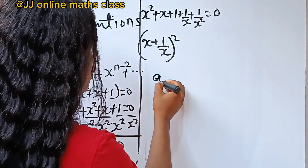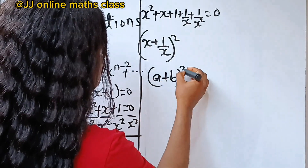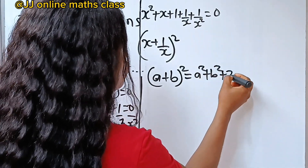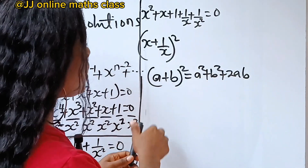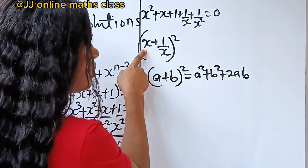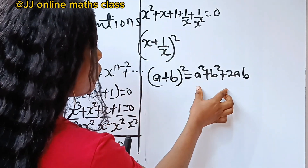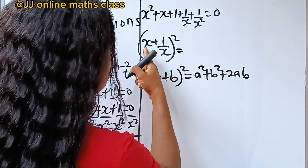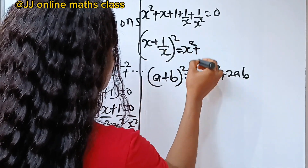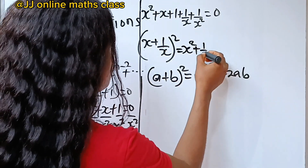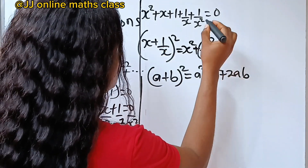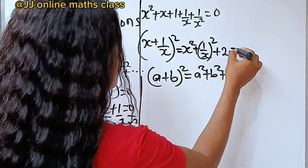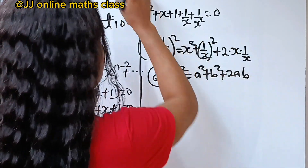In algebra, a plus b squared is equal to a squared plus b squared plus 2ab. In this case, a is x and b is 1 over x. So if we express it in this form, we have a squared — that is x squared — plus b squared — that is 1 over x squared — plus 2 multiplied by x multiplied by 1 over x.